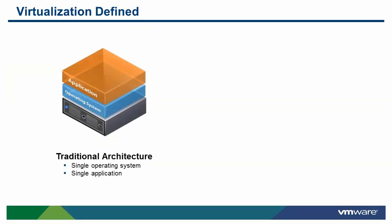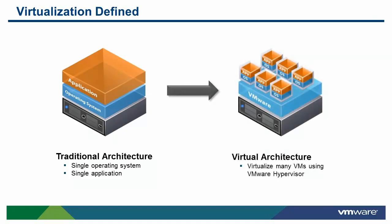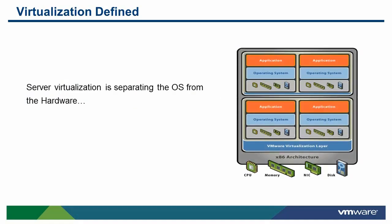Traditional server architecture consists of one operating system per physical server, and one application per operating system. With VMware virtualization, a hypervisor is installed on the physical server to allow for multiple, unique, and isolated virtual machines to run on the same physical server. Once we've separated the operating system from the hardware, we can utilize the hypervisor to present a complete virtual x86 platform to many virtual machines.